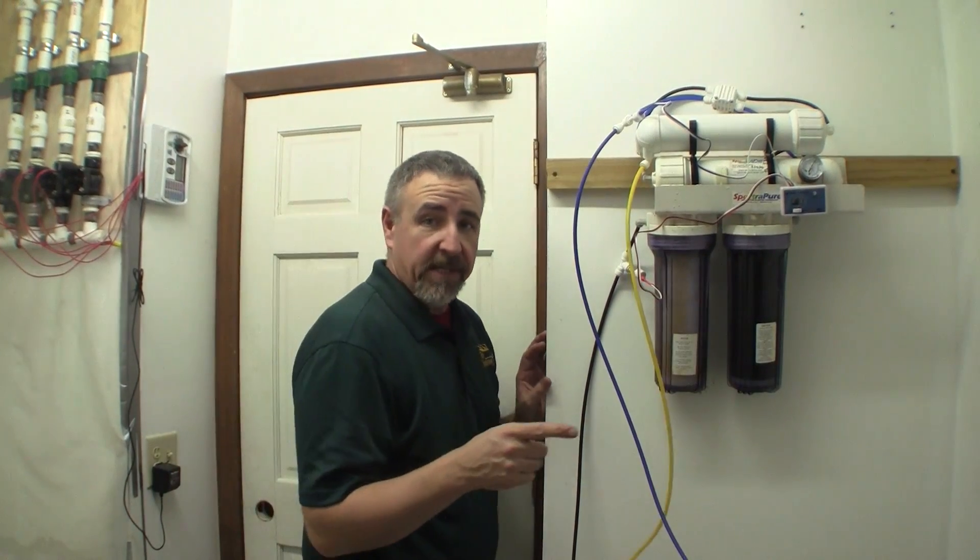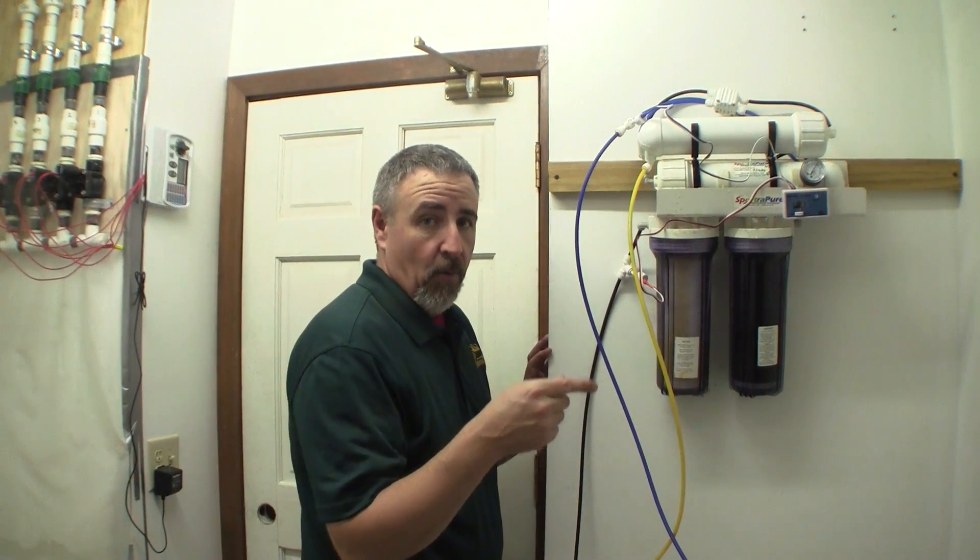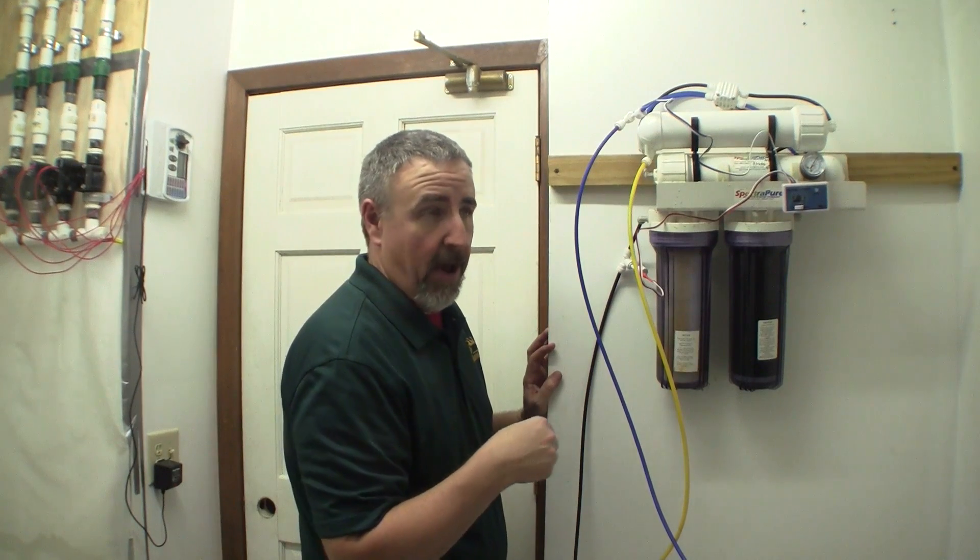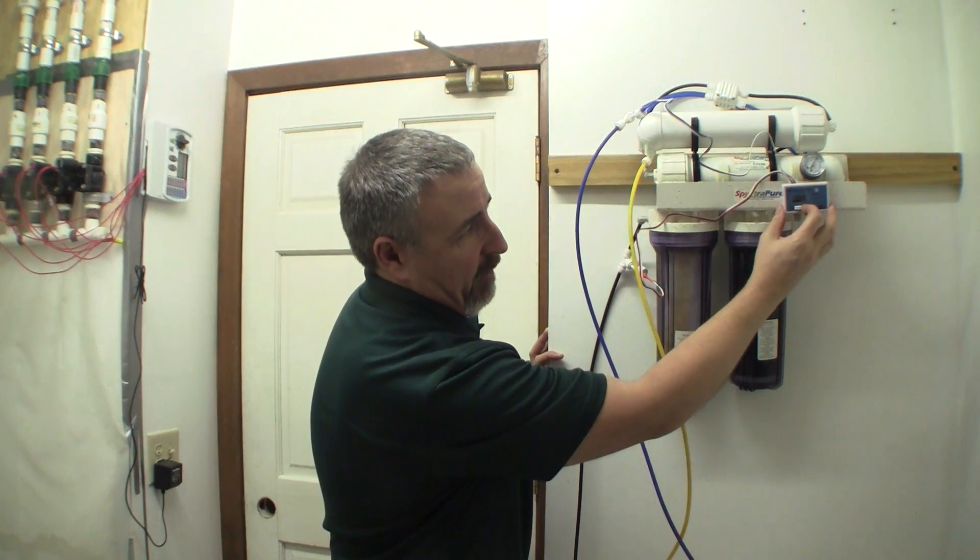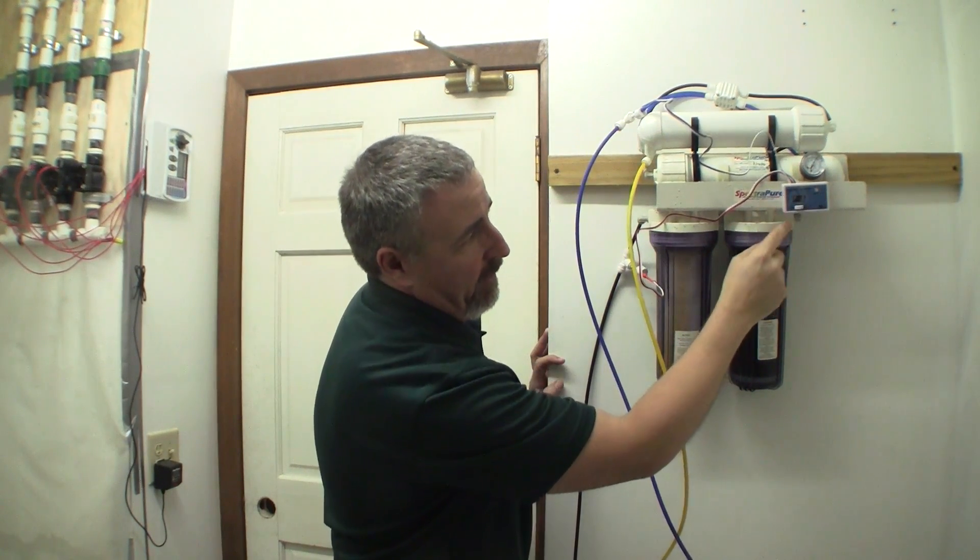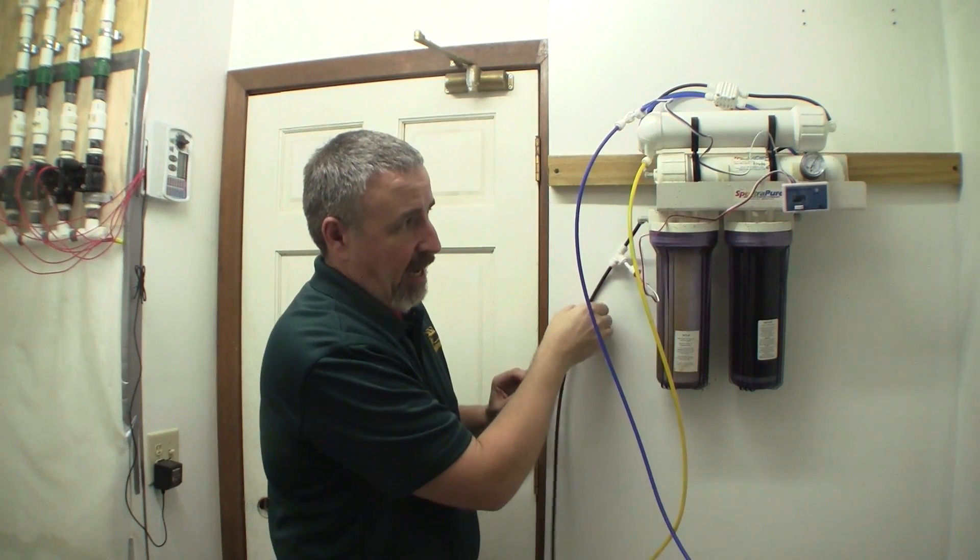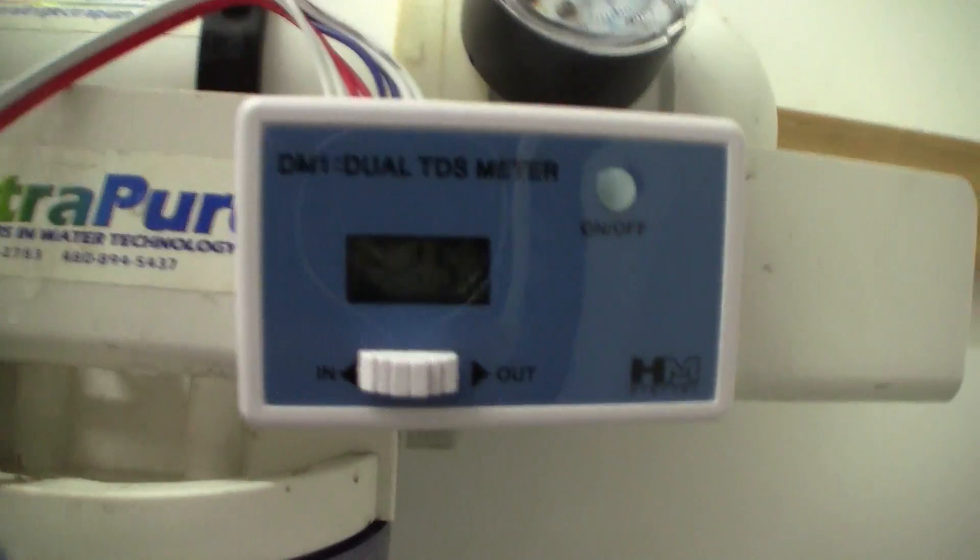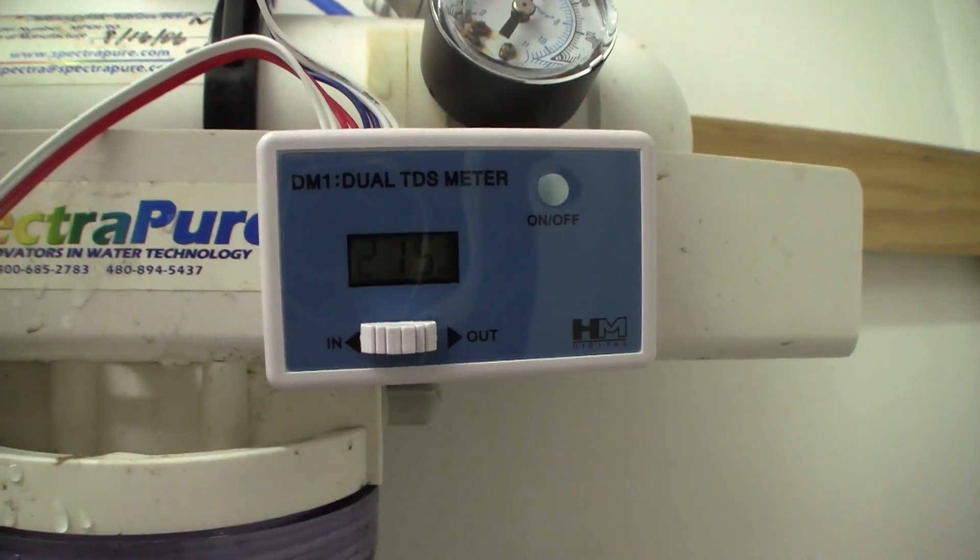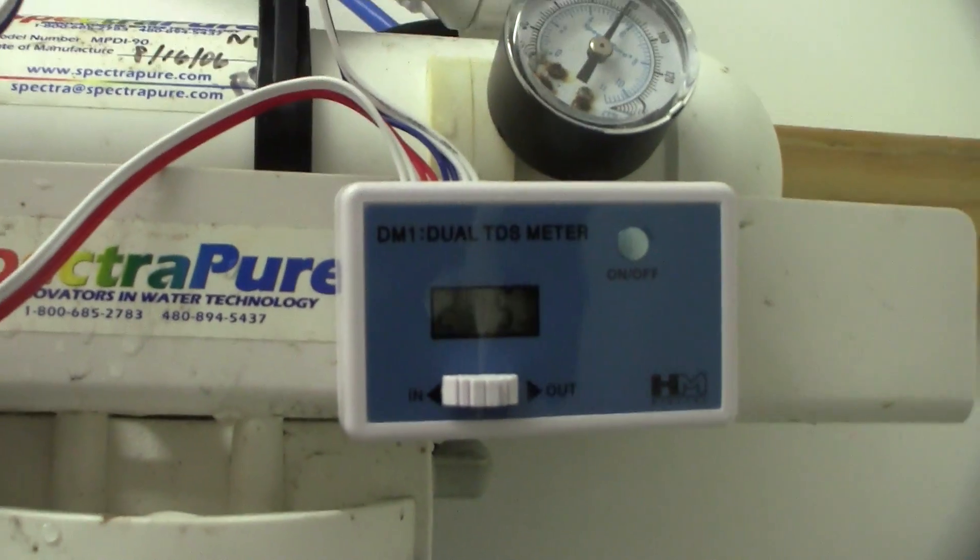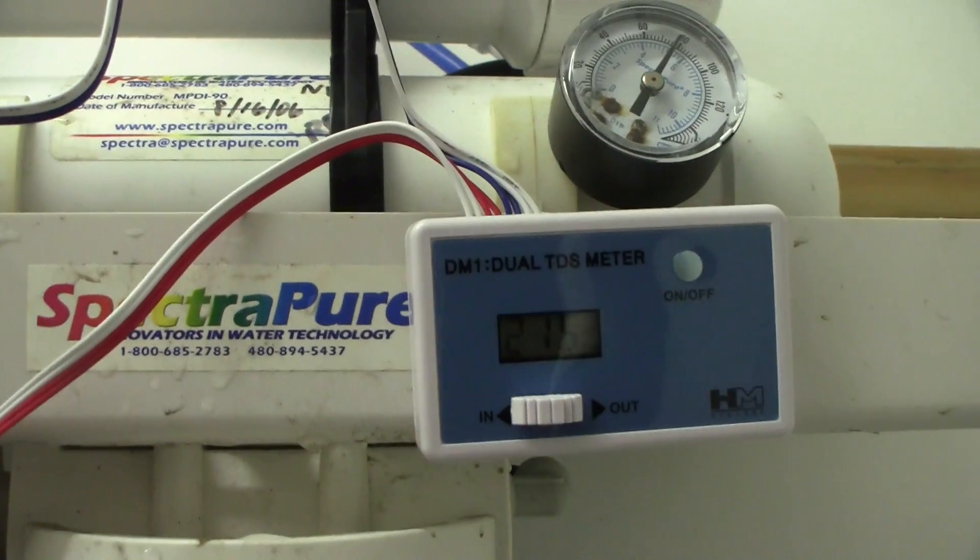Now what I can do is test to see what my TDS going in and coming out are. I'm going to take my meter, turn it on. Right now it's set to the inlet line, which is this line here. The TDS is reading, well, it's reading 275 parts per million. Now I can turn it over here to the outlet.